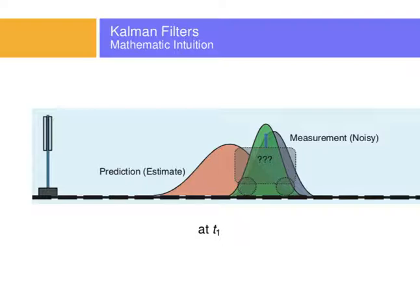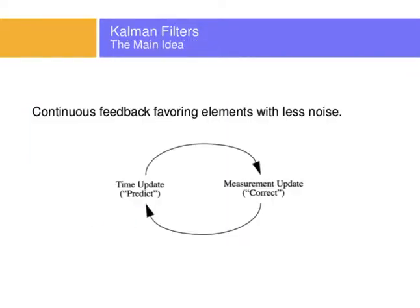I advise you look at the previous video — it gives a little example that ends with a slide. The idea about Kalman filters is that it's an iterative process. You first predict where you're going to be, then you measure using your sensors and computations, and you correct where you thought you were going to be. Then again you predict where you're going to be next, you move, you measure where you are, you correct, and so on and so forth.